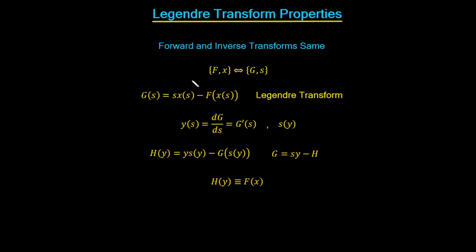The Legendre transform can be written as g(s) = s·x(s) − f(x(s)). We can create the inverse transform by defining a function y(s) = dg/ds. We're interested in the inverse s(y), and the inverse Legendre transform takes the form h(y) = y·s(y) − g(s(y)).